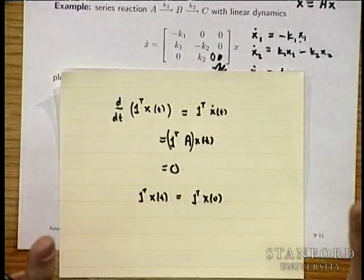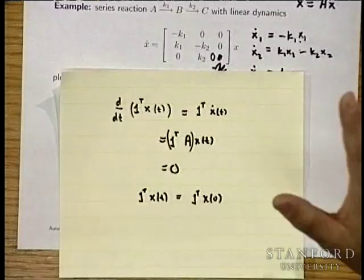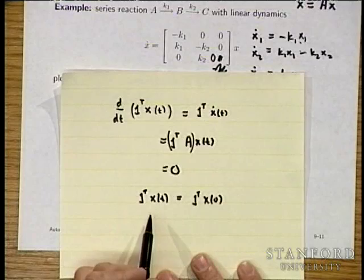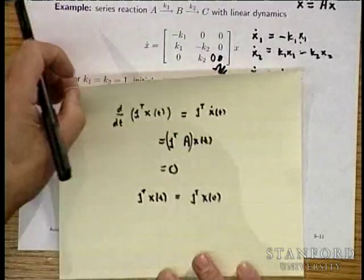There's a name for systems like this. It's important, just as with y equals Ax, to understand what every entry and every feature means. In this case, column sums being zero corresponds precisely to conservation of mass — or material, whatever you want to call it.